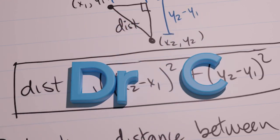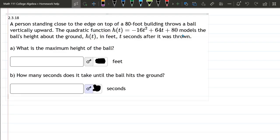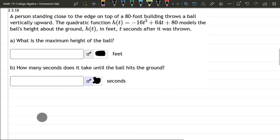This question: a person's throwing a ball and they're not on the ground. They're at the edge of an 80-foot tall building. They throw it straight up and h(t) is the height of the ball after t seconds.